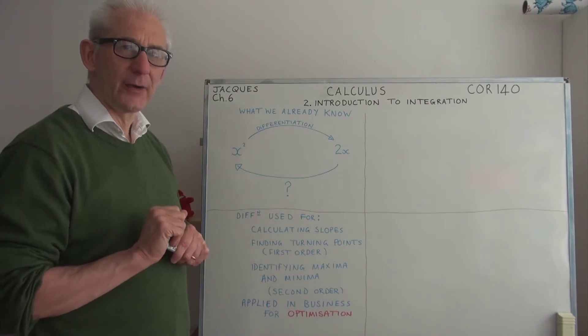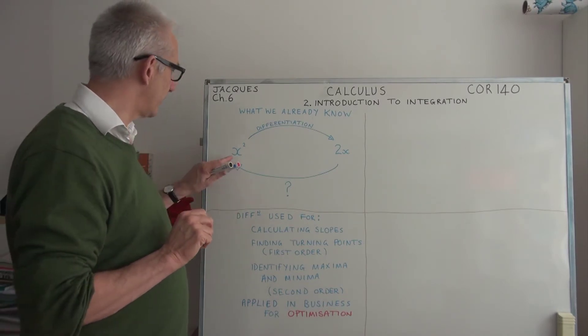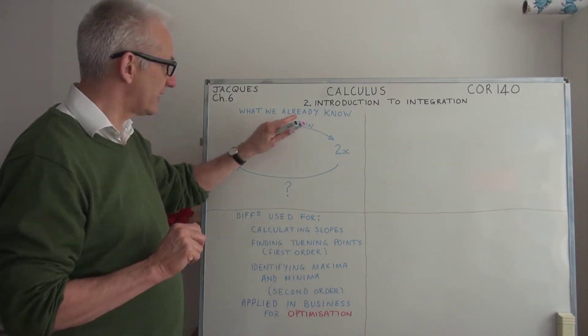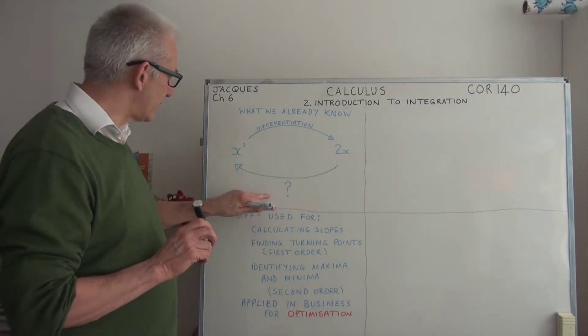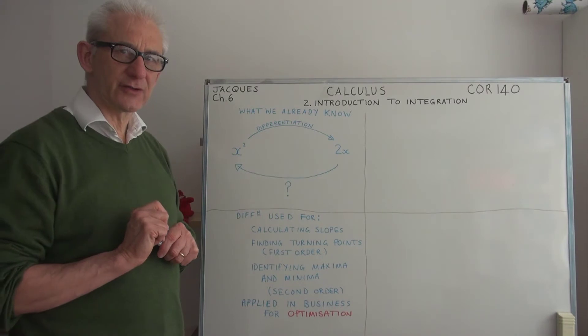If you can apply an operation to something like a function—in this case, the operation is differentiation—then we should be able to apply a reverse operation.